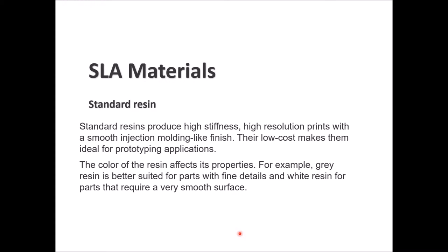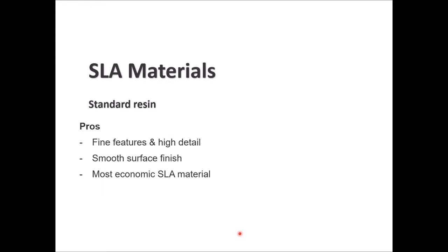For the standard resin, it gives you high stiffness, high resolution prints, and a smooth injection molding-like finish. It is considered low cost, which makes it ideal for prototyping applications. The color of the resin can affect the properties of the part — gray resin is better suited for parts with fine details, while white resin is better for parts that need smooth surfaces. Good sides: fine features, high detail, smooth surface finish, and it's the most economical SLA material. Bad sides: brittle, low elongation at break, low impact strength, and low heat deflection temperature.